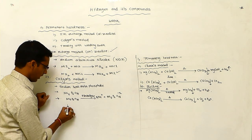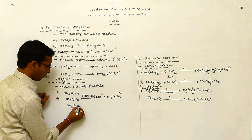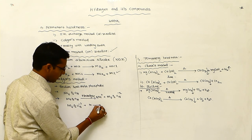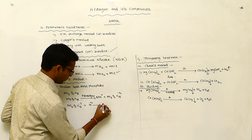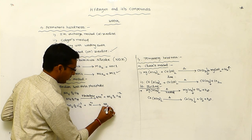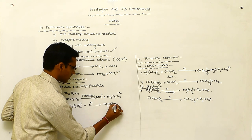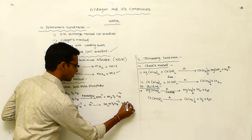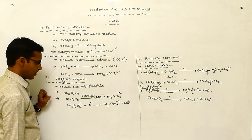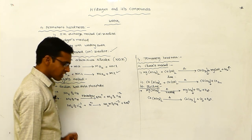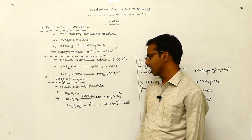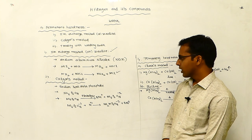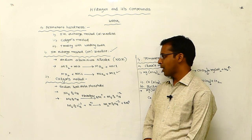This Na₄P₆O₁₈²⁻ reacts with the metal ion M²⁺ and is converted to Na₂M(P₆O₁₈)²⁻ plus Na⁺. These are the types of reactions taking place in the Calgon method. Calgon means sodium hexametaphosphate.